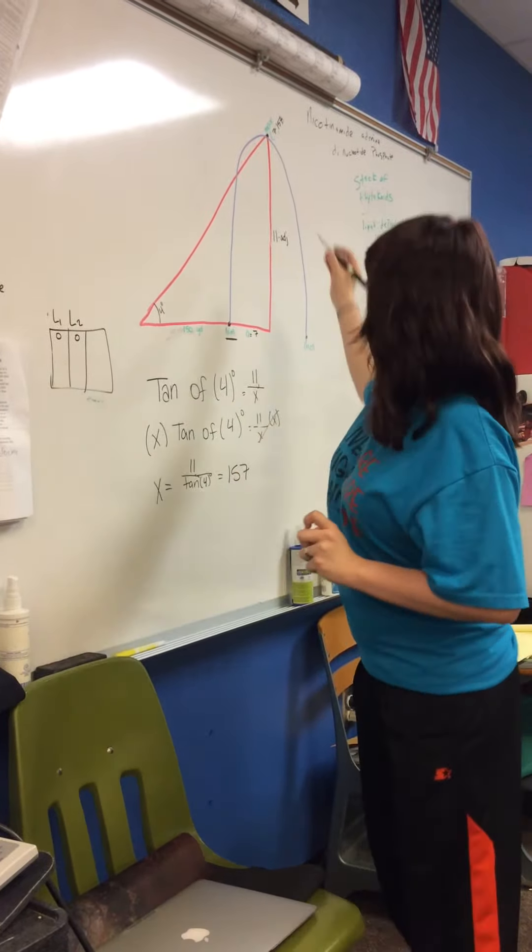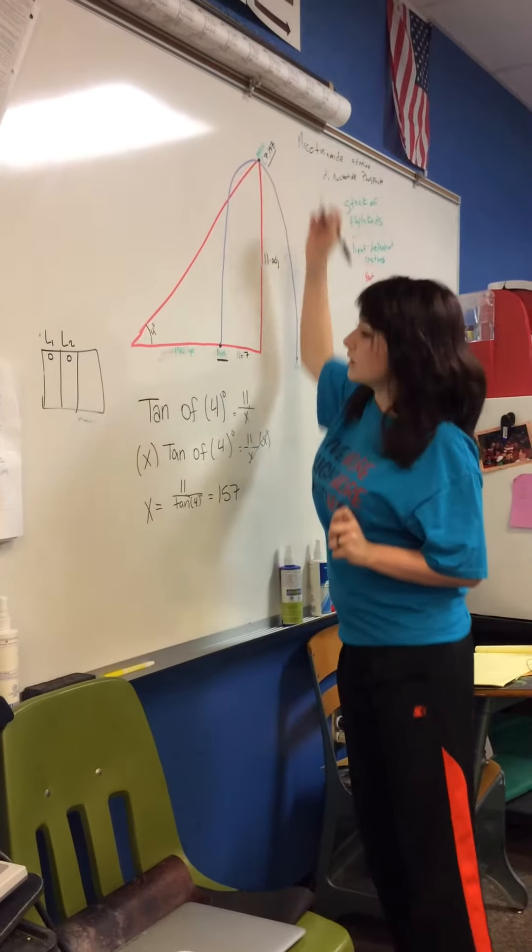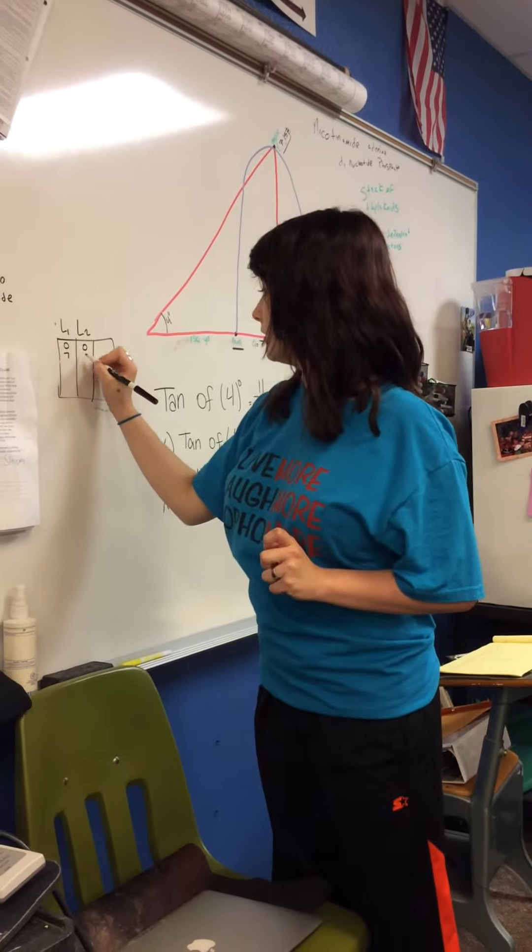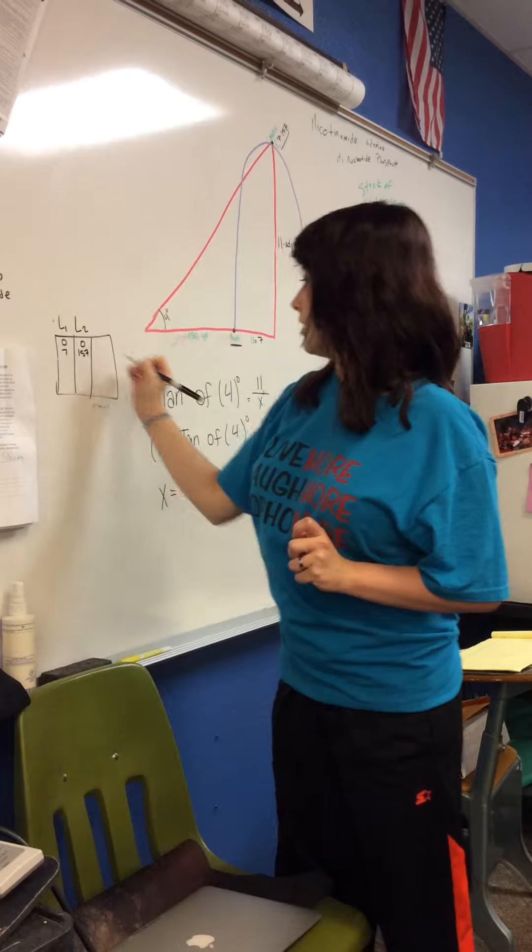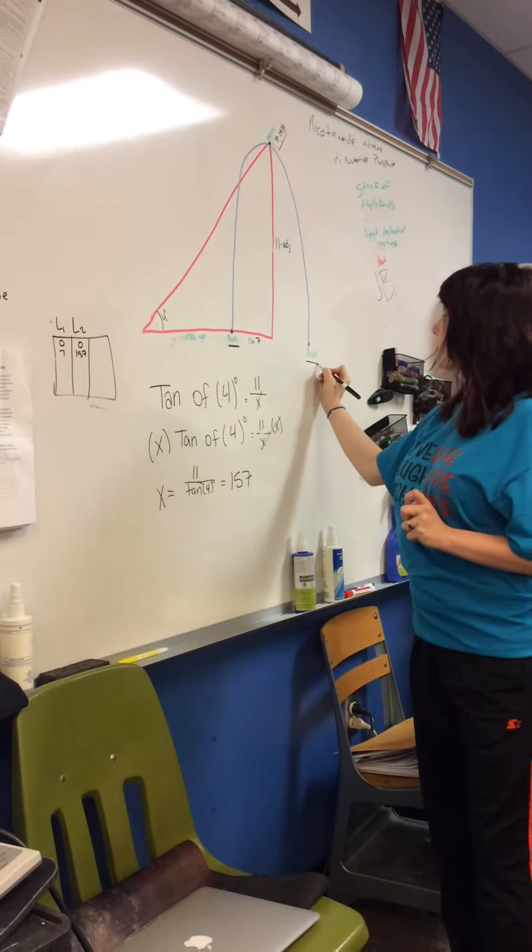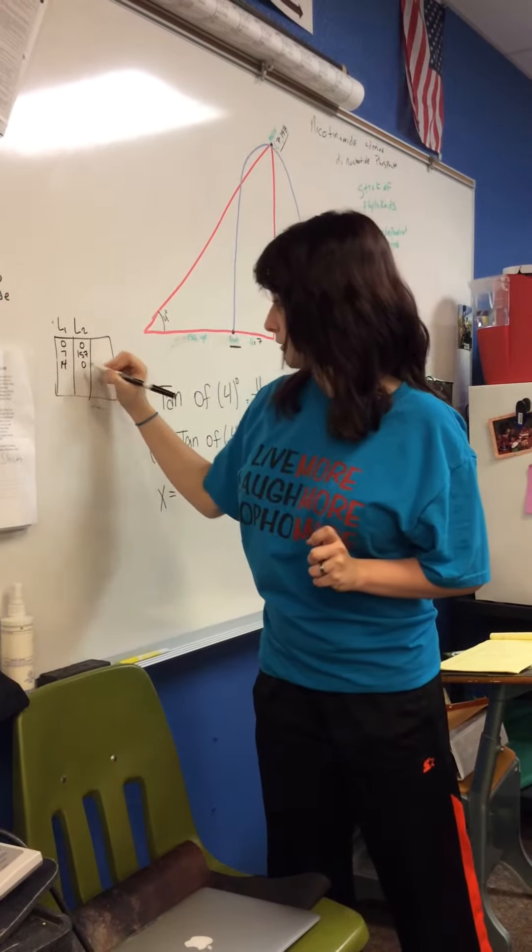Then you're going to put your two points, 7, 157. Then you're going to put your ending point, which is 14 and 0.